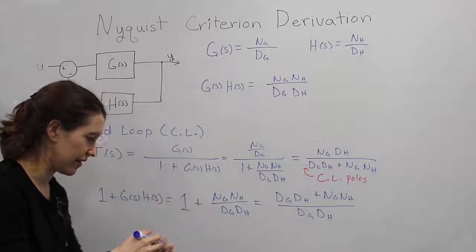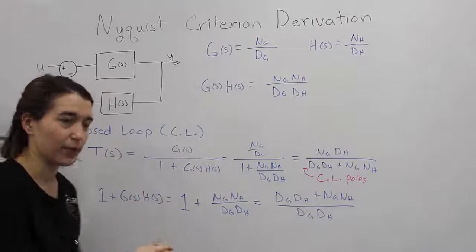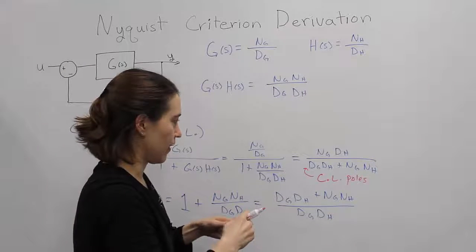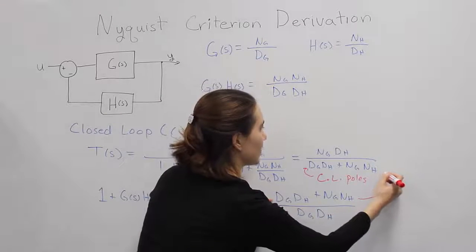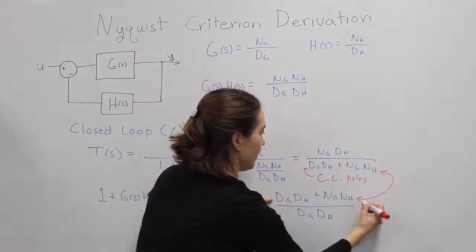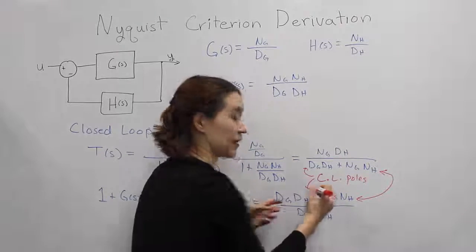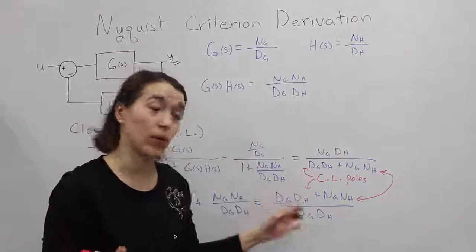If we look at this equation, you will notice something very important. This equation, the top equation, is exactly the same as this equation, which is the expression for the closed-loop poles.